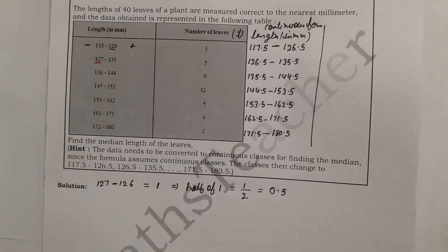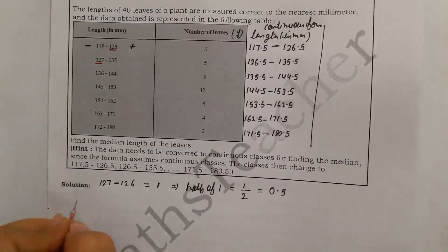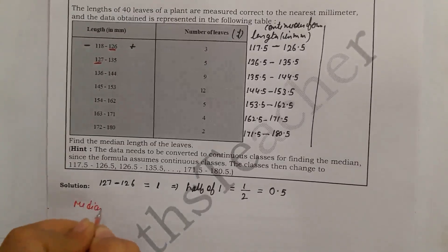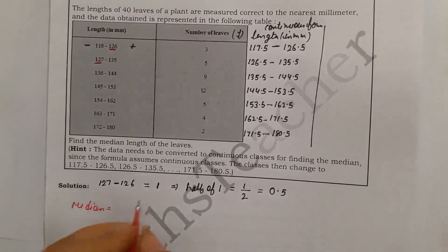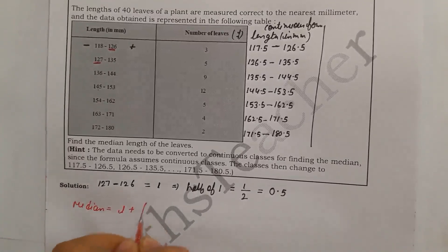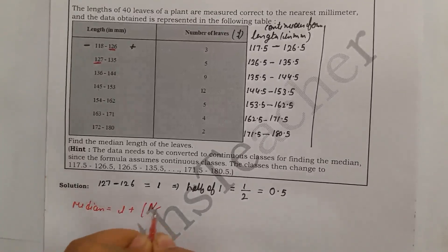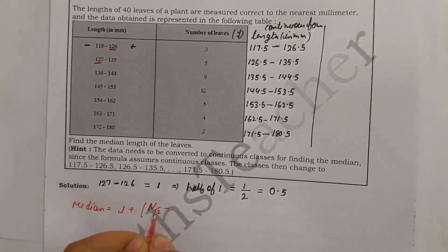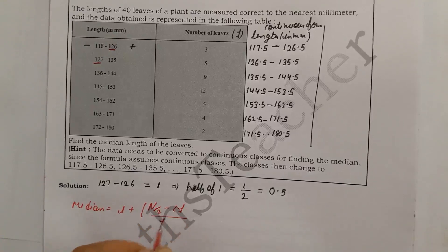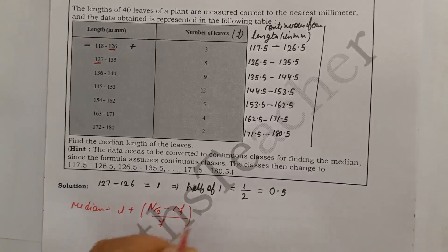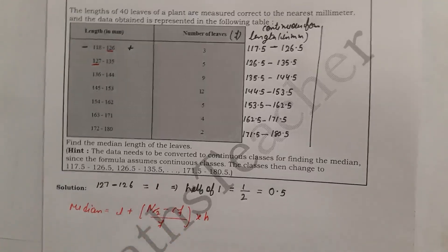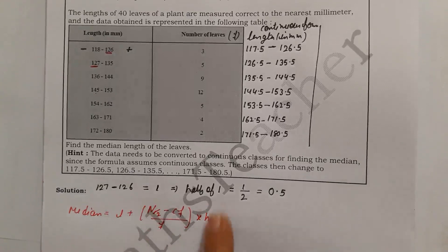To find the median, first we write the median formula: Median = L + [(n/2 − cf) / f] × h. We will need all these variables: L, n, cf, f, and h.